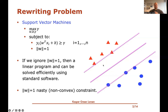Unfortunately, this constraint we don't like — it's kind of nasty and in some sense a non-convex constraint. That will become clearer later, but we don't like it because it means we cannot use our standard solvers to actually tackle this optimization problem. So in this video, we'll try to rewrite the problem into a more convenient form.